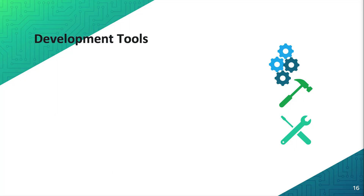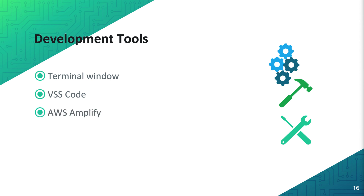Let's talk about the development tools we are going to use in this tutorial. We will be utilizing a terminal window for configuring our project, then use VS Code as an IDE to navigate through our code. We will use AWS Amplify to configure connectivity with the AWS environment and provision the required resources, and we will use the AWS console to look through settings for our deployed bot.